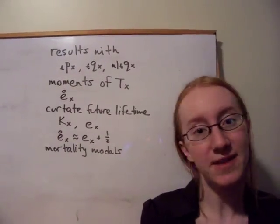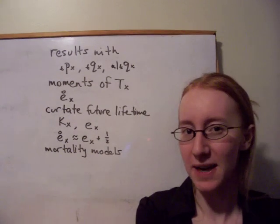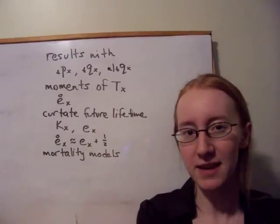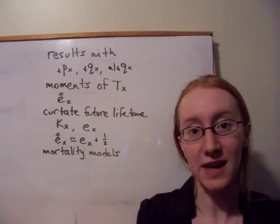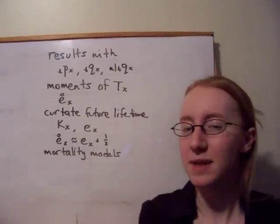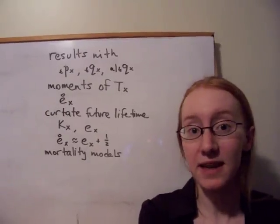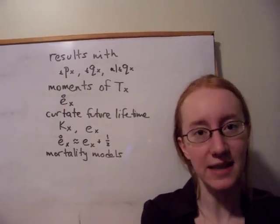Q's are the probability of dying in a certain time period starting from age X. A deferred Q is the probability of dying in a time period of length T starting from age X, except we're deferring that time period U years into the future. There are a number of results we can now express using these new symbols.